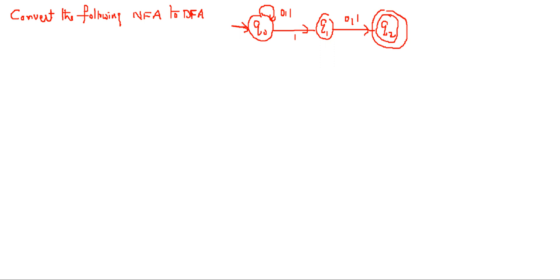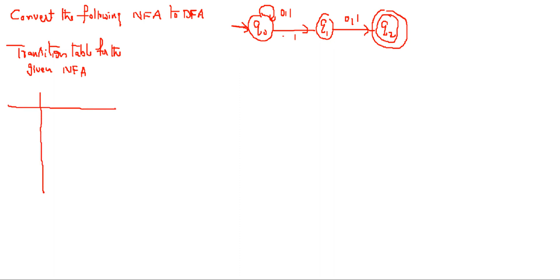Now we will go with another example on converting NFA to DFA. In this example, Q0 is the initial state and Q2 is the final state. Now we will write the transition table for the given NFA. The input symbols are 0 and 1, and the states are Q0, Q1, and Q2. Q2 is the final state and Q0 is the initial state.